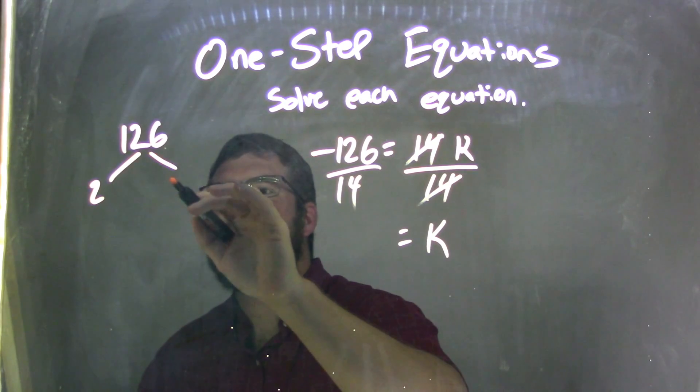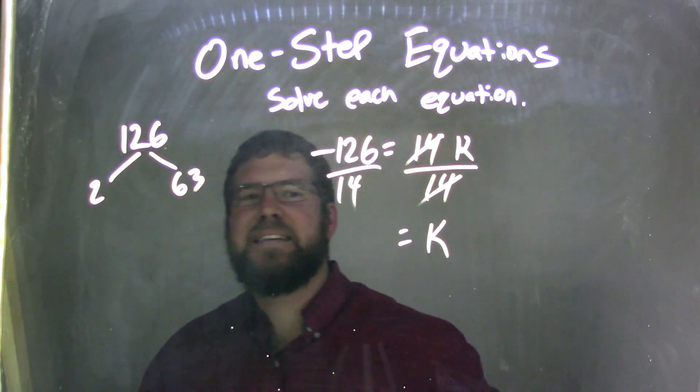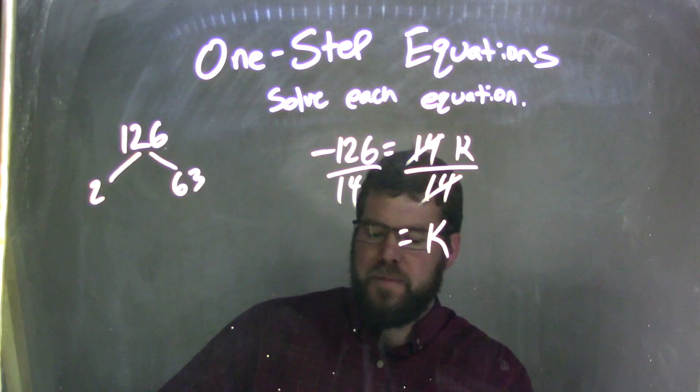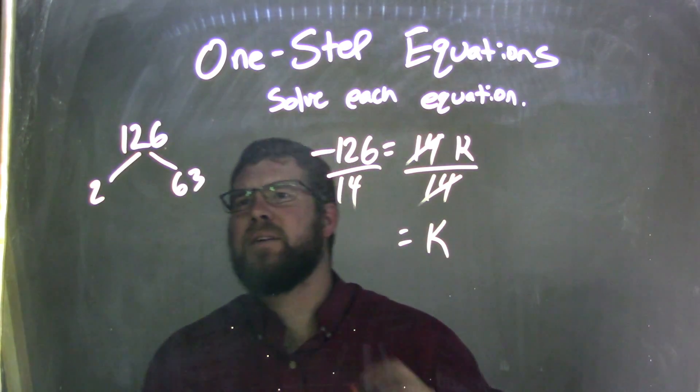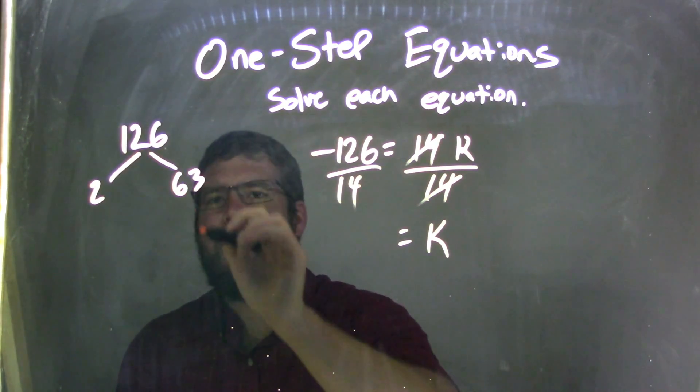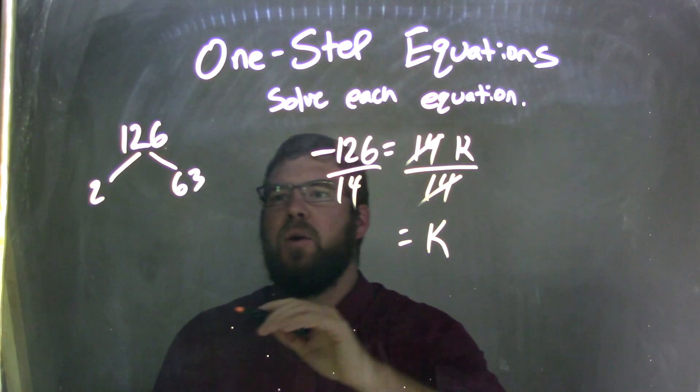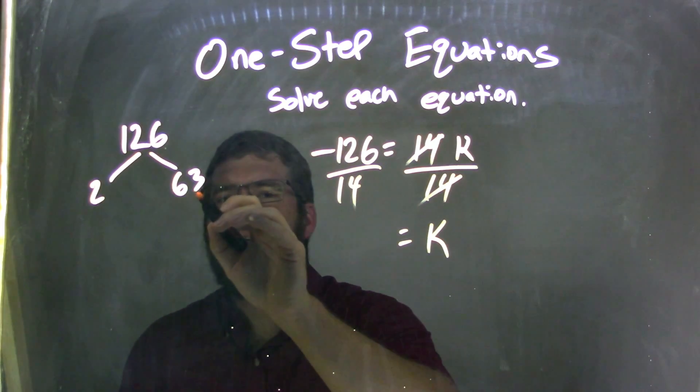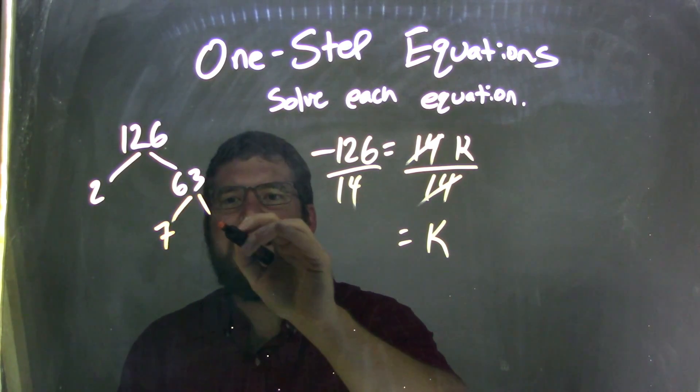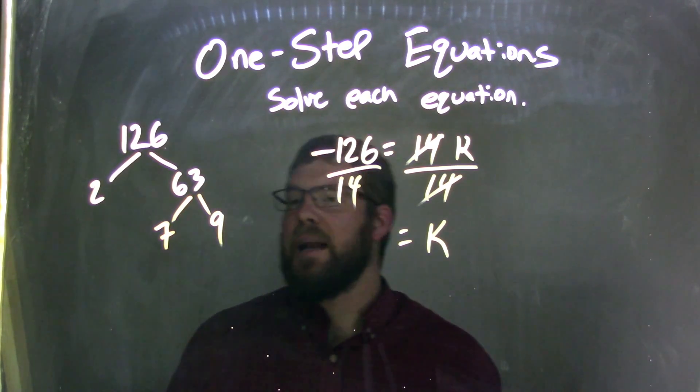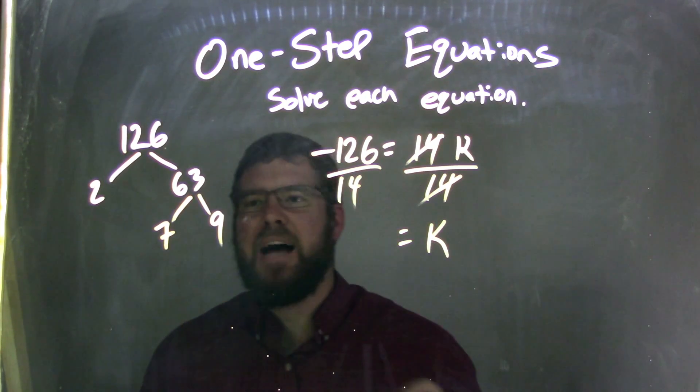Well, 2 goes into 126 63 times. 63 times, right? Is that right? Yeah, 6 and 3. Okay, 63. Well, doesn't 7 go into 63 too? 7 goes into 63 9 times, right? 7 times 9 is 63. And I'm actually going to stop here.